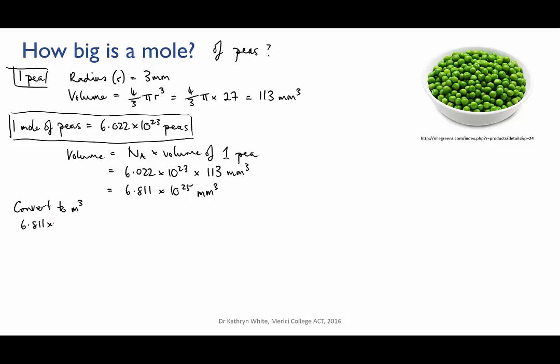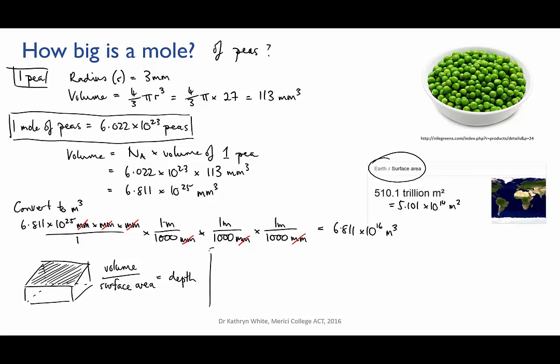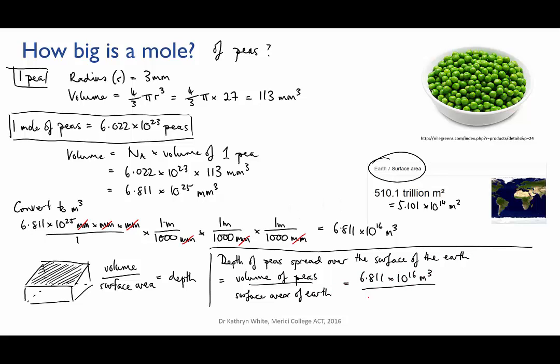So let's convert to cubic meters and see if that helps. We'll write down what we know and convert the millimeters cubed to meters cubed by converting millimeters to meters three times over. That gives us 6.811 times 10 to the 16 cubic meters. Hmm, well that seems like quite a lot, but I still can't really imagine it. So the surface area of the earth is 5.1 times 10 to the 14 meters squared. So if I divide the volume of peas by the surface area of the earth, that'd be like spreading that whole volume of peas evenly over the surface of the earth. How thick would that layer be? So we can calculate that by dividing the volume of the peas by the surface area of the earth.